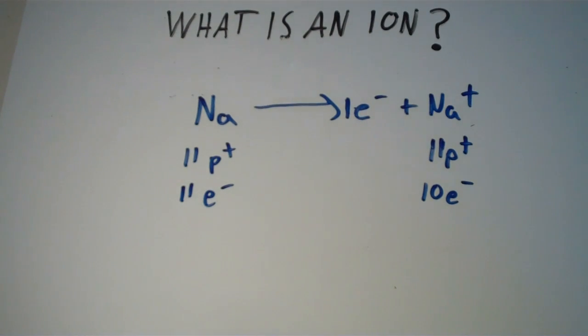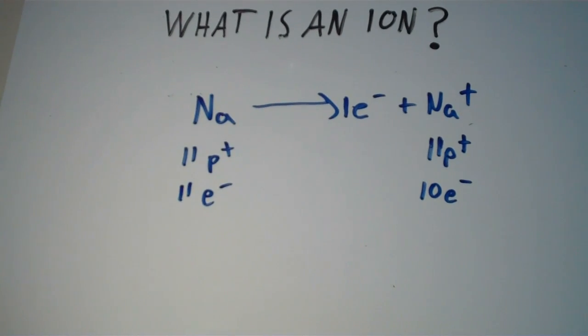This particular example of an ion, or any positively charged ion, we call that a cation.